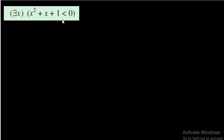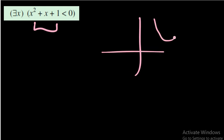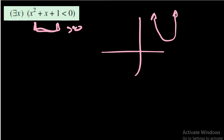The next question is the opposite: there exists x such that x² + x + 1 < 0. We already established that we cannot even find a number making it zero. The graph is completely above the x-axis — the leading coefficient is positive, giving an upward parabola with no real roots. Since the expression is always greater than zero, it can never be less than zero. This statement is completely false.